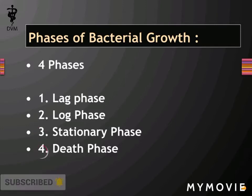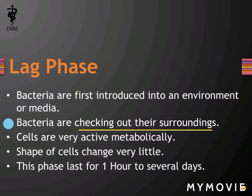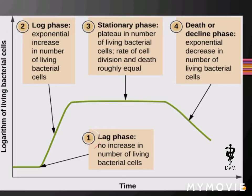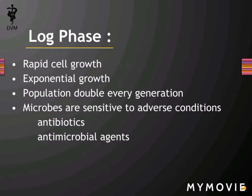In the lag phase, bacteria are first introduced into the environment. They check their surroundings; cells are very active but there is very little change in cell numbers. The lag phase lasts from one hour to several days. The graph shows no increase in the number of living cells — it is just a metabolic phase.